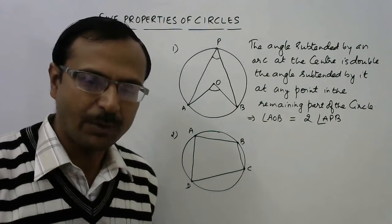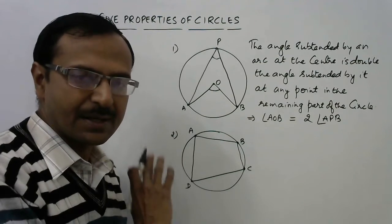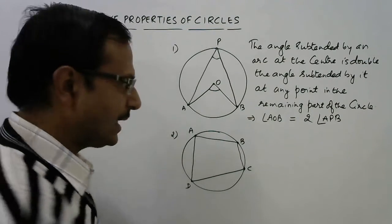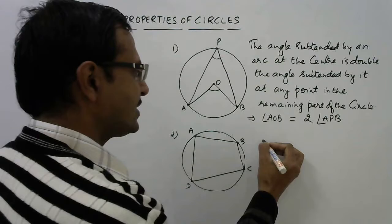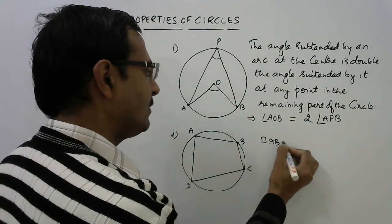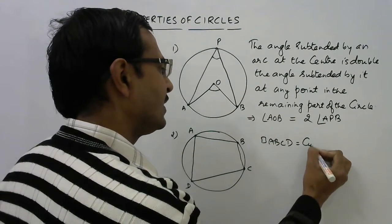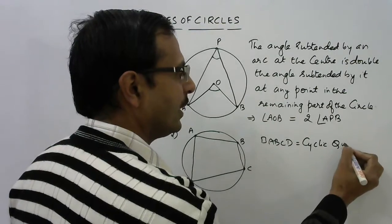This quadrilateral which is formed inside this circle is known as a cyclic quadrilateral. So this quadrilateral ABCD is a cyclic quadrilateral.